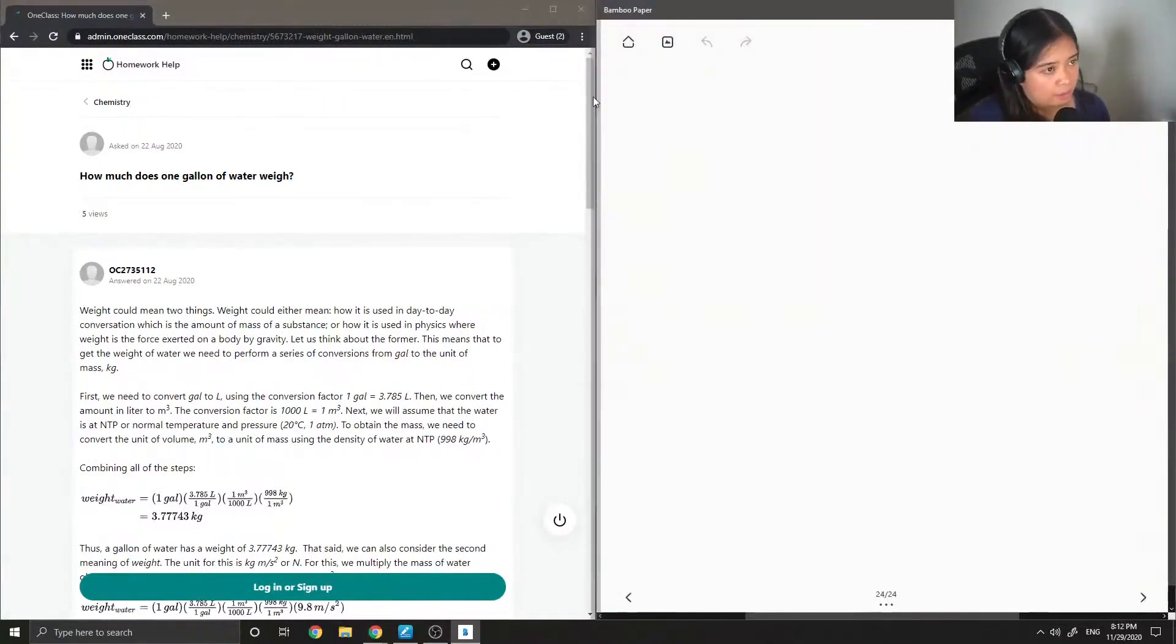So question 11 asks how much does one gallon of water weigh. Okay, so first let's recall that one gallon is equal to 3.785 liters.